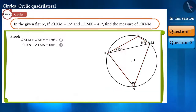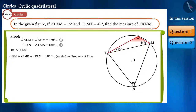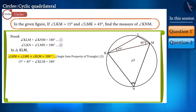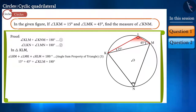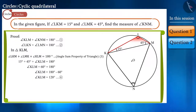Now observe triangle KLM. We know that the sum of the three angles of a triangle is 180 degrees. We know the values of angles LKM and LMK, so by placing their values in this equation we can easily find the value of angle KLM. We get the value of angle KLM as 120 degrees.